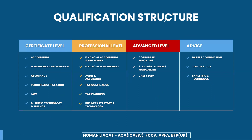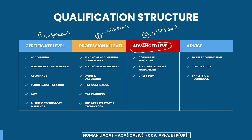Regarding the qualification structure of ACA ICAAW, ACA is divided into three levels: Certificate Level, Professional Level, and Advanced Level. There are six exams in Certificate Level, six exams in Professional Level, and three exams in Advanced Level — making 15 exams in total. Since this orientation is specifically focused on the Advanced Level, we will not be talking about Certificate or Professional Level at this point. We will have separate orientations for those levels.